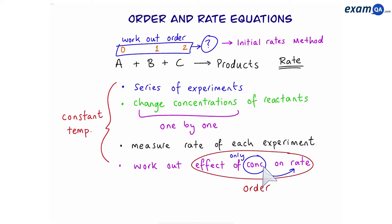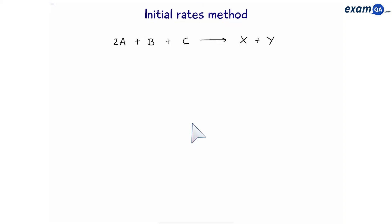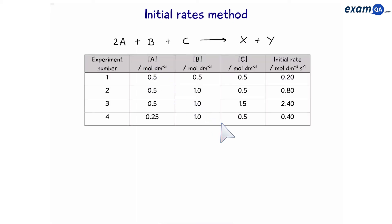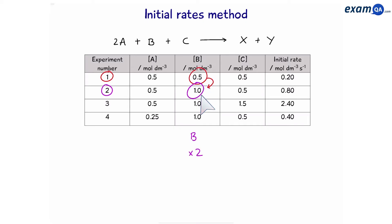Let's do some examples of the initial rates method. We have a reaction A plus B plus C makes products X and Y. We want to know the order of A, B, and C. Let's say experiment number 1 is our baseline — we're going to compare some reactions with experiment 1. We can compare experiments 1 and 2 to see what has changed. We can see here that B has doubled from 0.5 to 1. A and C have not changed. Now we look at the rate — the rate has times by 4. Let's figure out what the order of B is: is it zero order, first order, or second order?